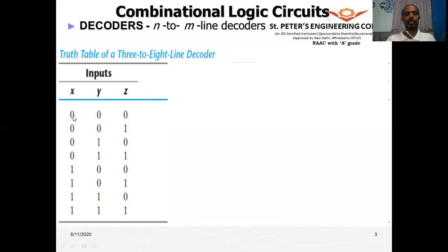Looking at the min terms for three inputs: X complement, Y complement, Z complement; X complement, Y complement, Z; and so on. When we have three bits, how many states do we have? It is 2 power 3, which is 8 different states. Each bit can take only two states — 0 or 1 — so with three bits we have 2^3 = 8 combinations, from all bits being zeros to all bits being ones.